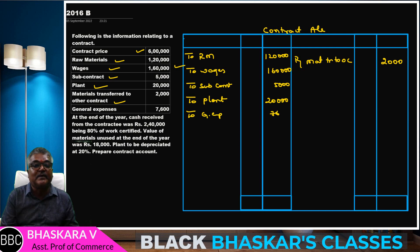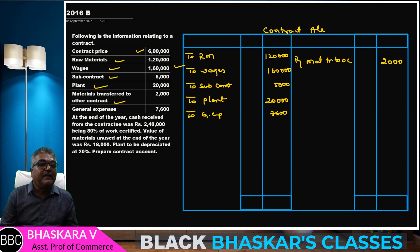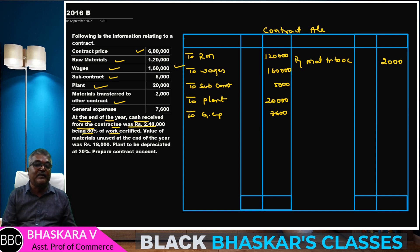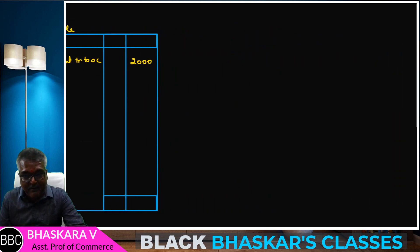General expenses — general expenses 7,600. In this problem, work certified is not given. The adjustment: at the end of the year, cash received from the contractor — 2,40,000 — being 80% of the work certified.